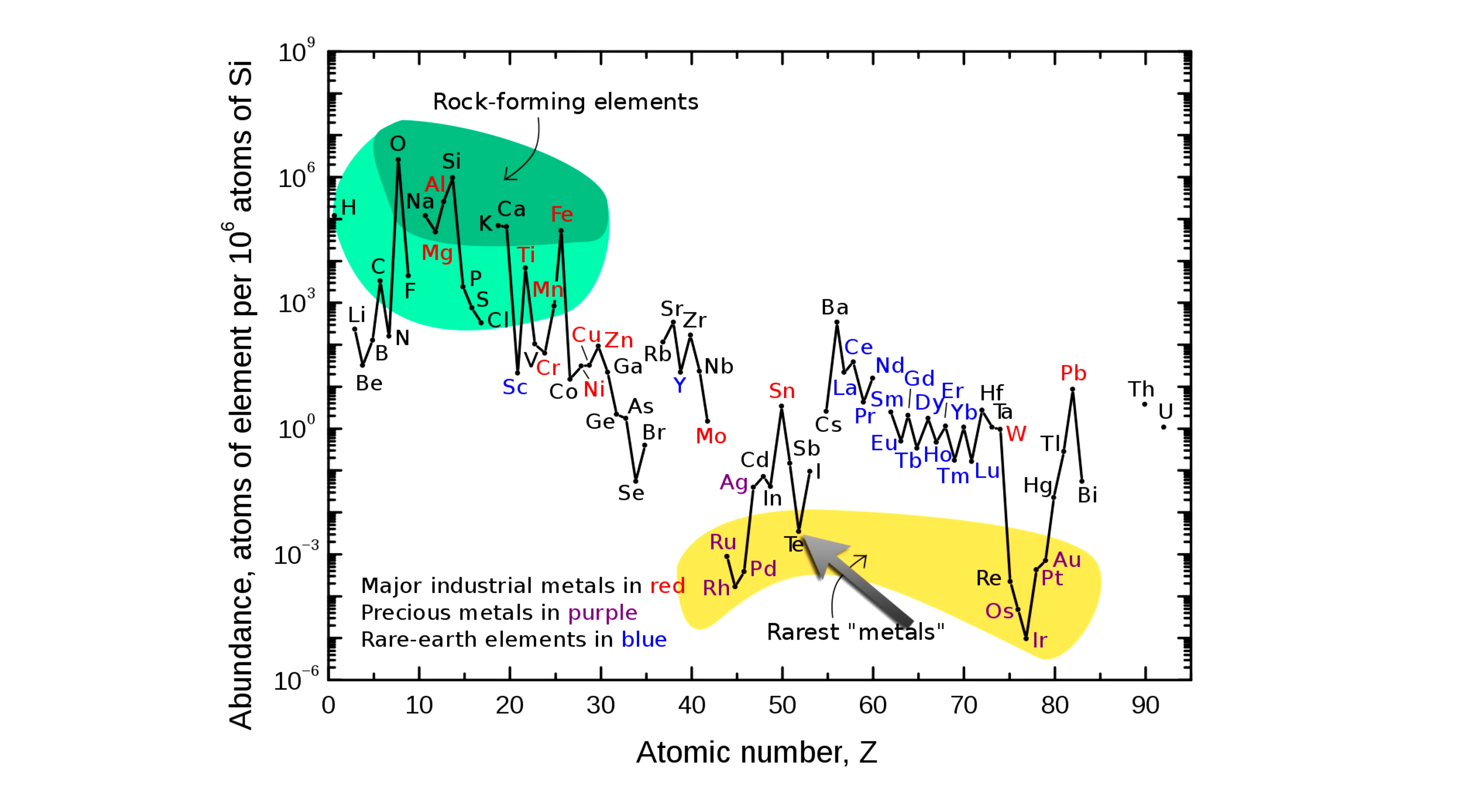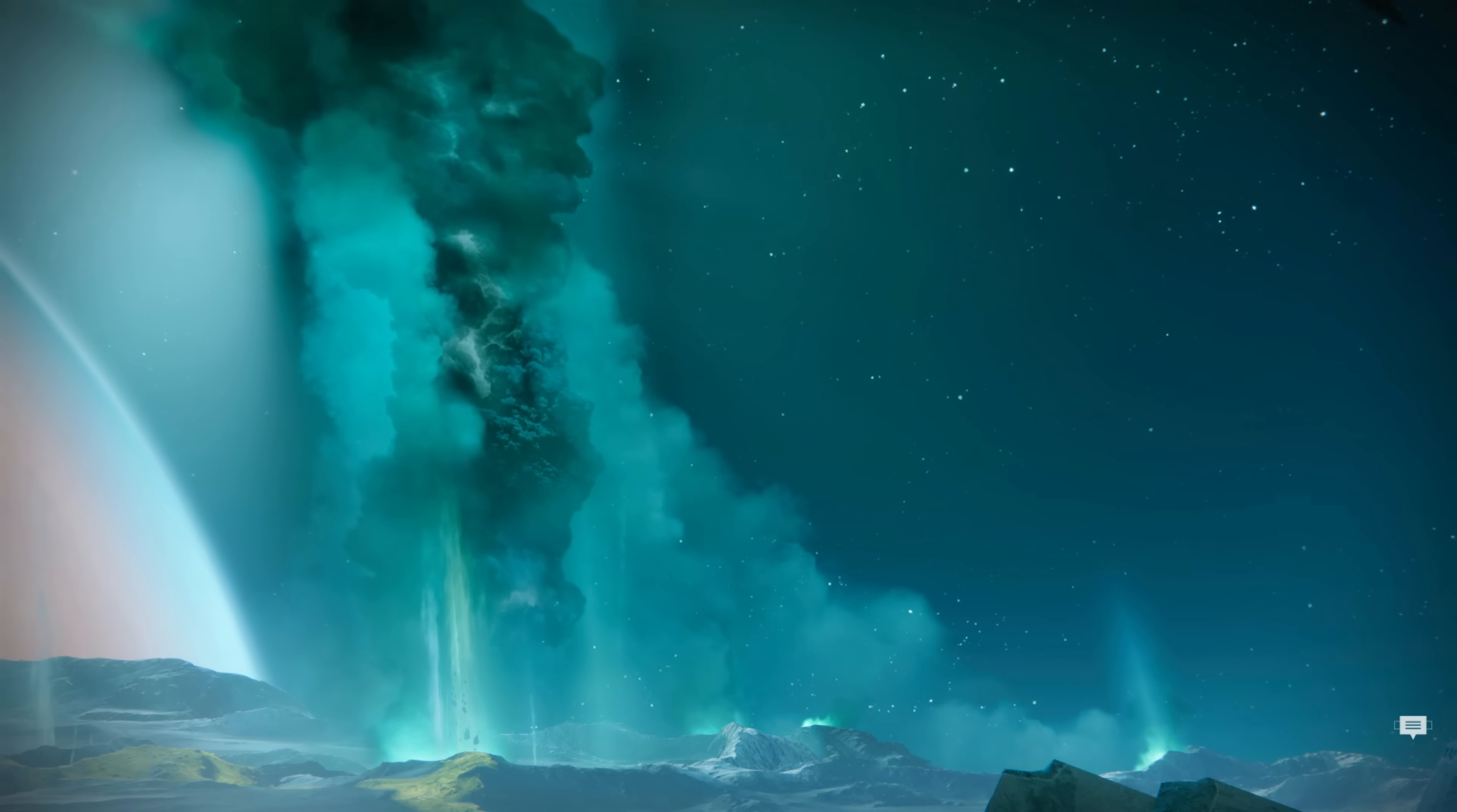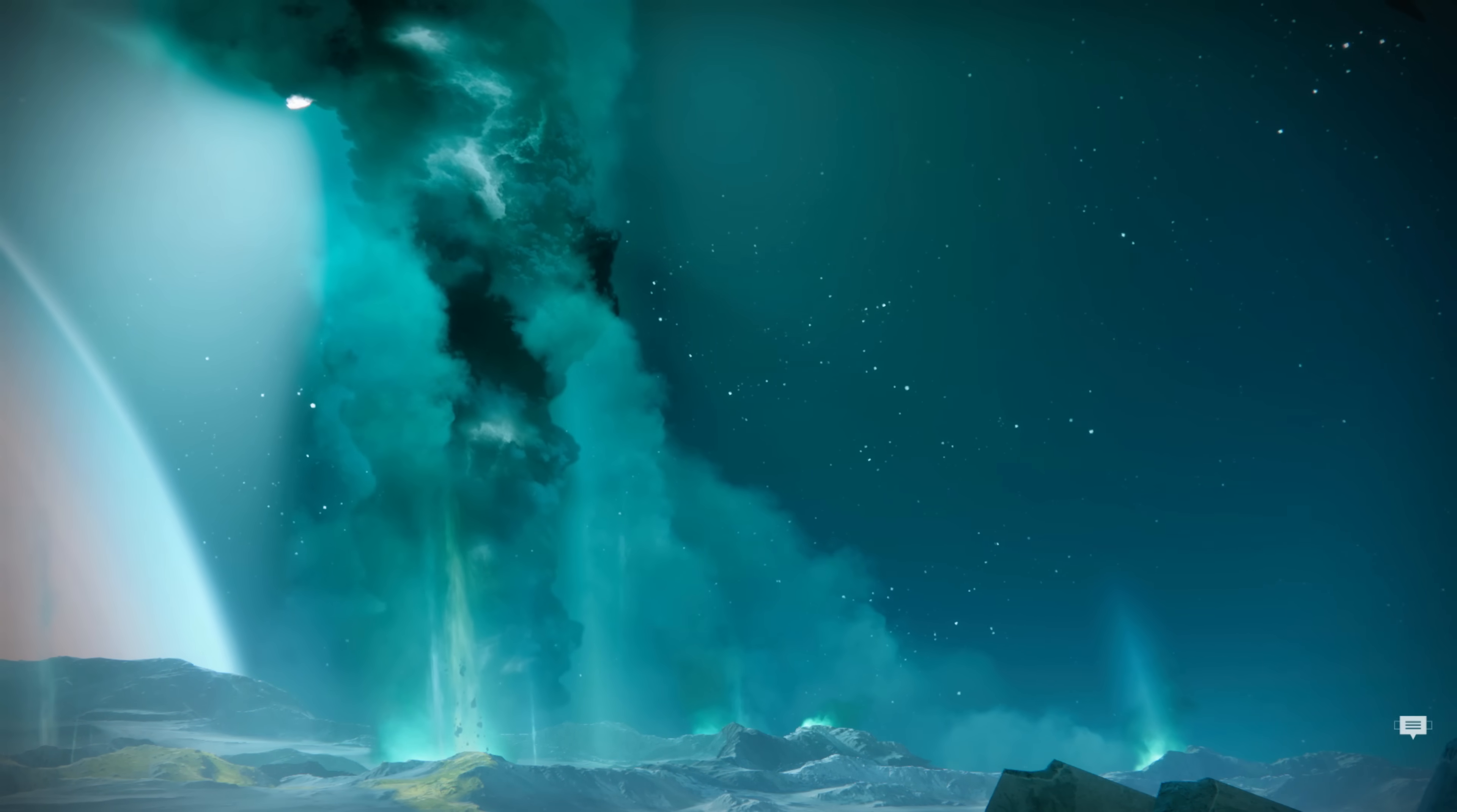Tellurium is so rare because during the first stages of Earth's formation, its compounds reacted with water forming volatile hydrogen telluride, which easily vanished into open space through Earth's atmosphere.